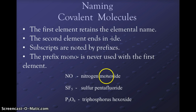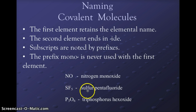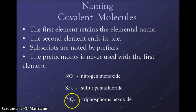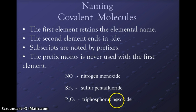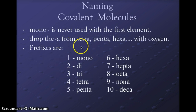For example, NO is nitrogen monoxide — mono means one, and oxide refers to oxygen. SF₅ is sulfur pentafluoride — penta is the prefix for five, sulfur keeps its name, fluorine becomes fluoride. P₃O₆ is triphosphorus hexoxide — tri means three phosphorus, hexa refers to six oxygens. The prefixes are: mono (1), di (2), tri (3), tetra (4) — remember Tetris pieces have four parts — penta (5), hexa (6), hepta (7), octa (8), nona (9), and deca (10).